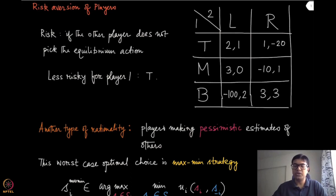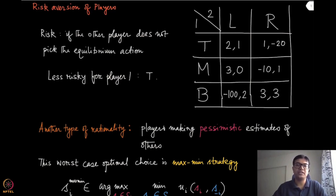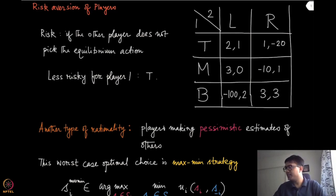Now we are going to address a different kind of situation where one player might be rational and intelligent but is not sure whether the other player is also rational and intelligent. So there is a certain amount of risk while playing the Nash equilibrium strategy when the other player might not be as intelligent as the current player.